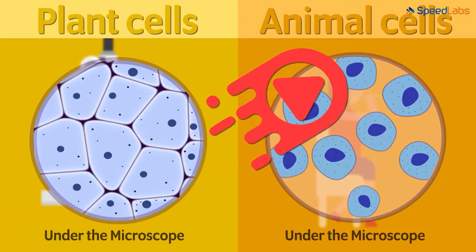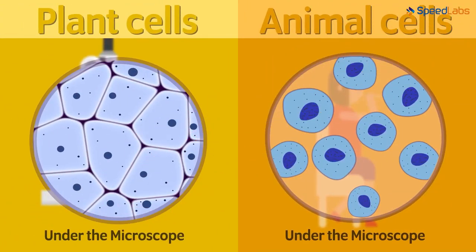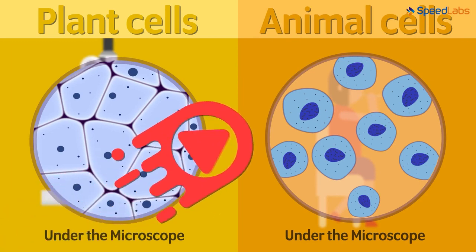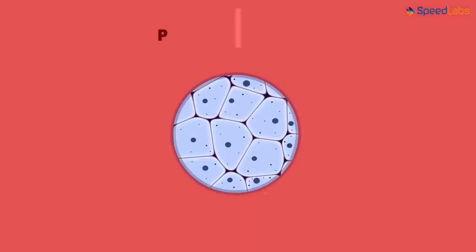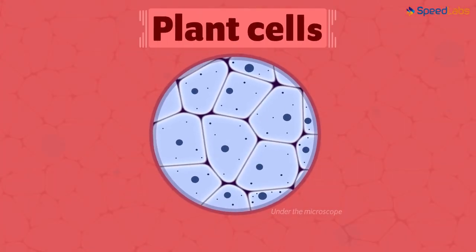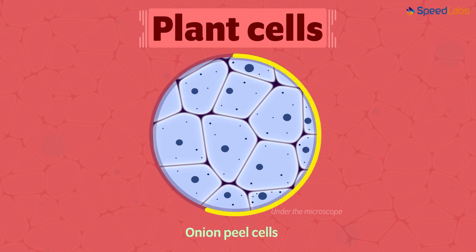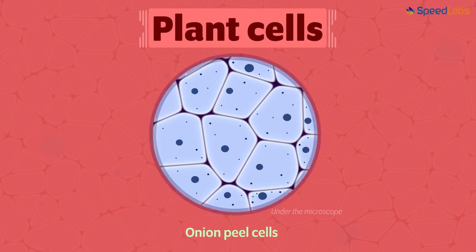This is where we left off in the previous video. We mounted plant cells and animal cells on slides to observe them under the microscope. Let's study them in general in this video. For our convenience, let's select just one — the onion peel cells — to understand the structure and the contents of the cell.